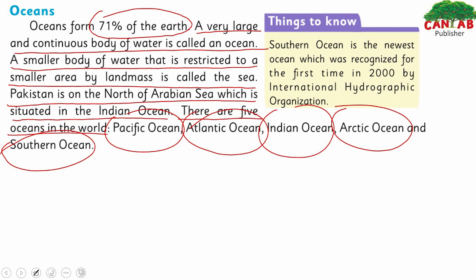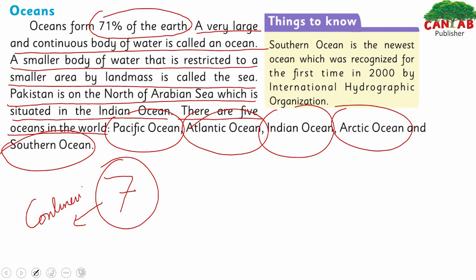So basically, we have seven continents and five oceans.